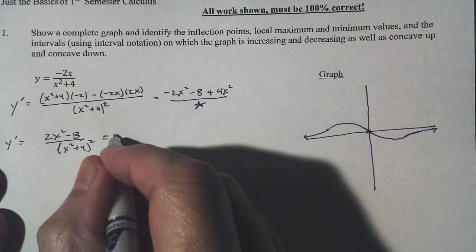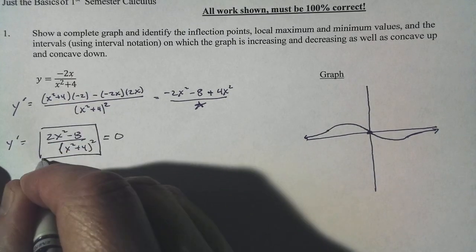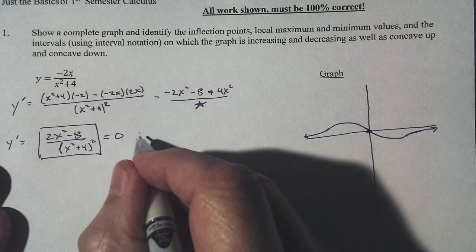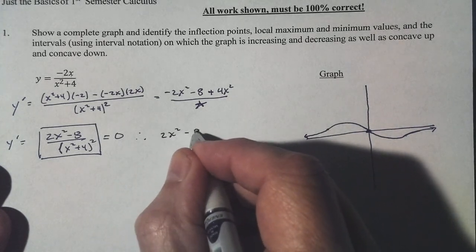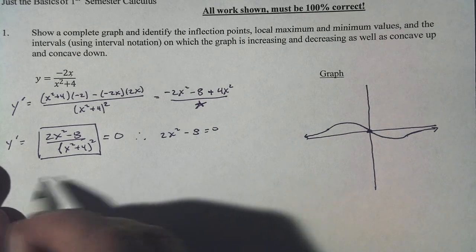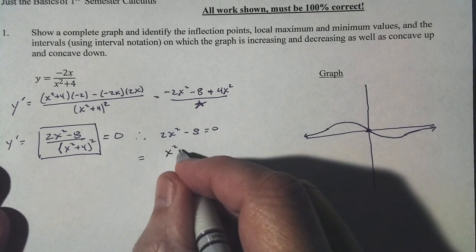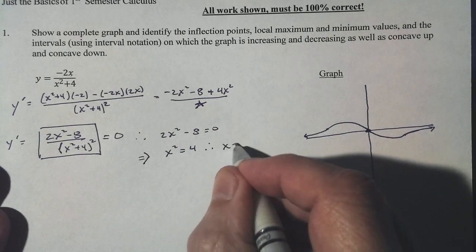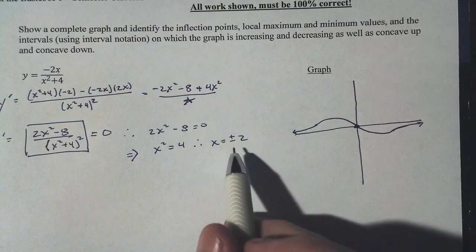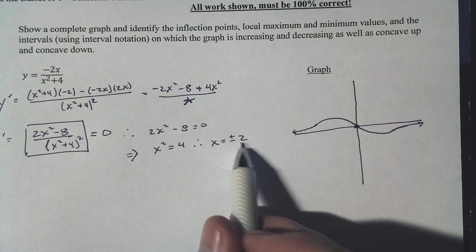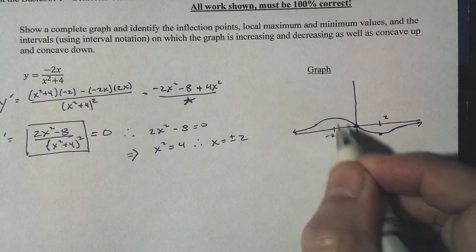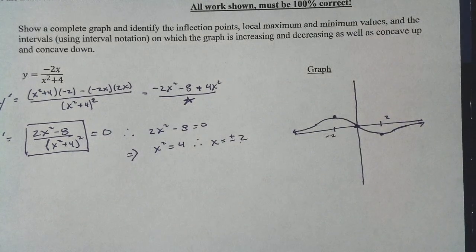I want to set the first derivative equal to zero. It's zero when the numerator is zero, so 2x squared minus 8 must equal zero. Therefore x squared equals 4, so x equals plus or minus 2. Those are the spots where the graph levels off. The graph levels off at x equals 2 and at x equals negative 2 — looks like we've got our max and our min.